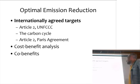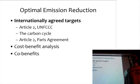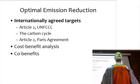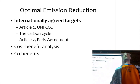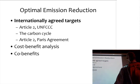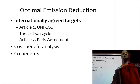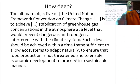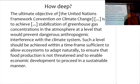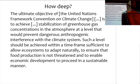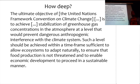Let's talk about what has been agreed internationally about what we should do about climate change. I'm going to start with Article 2 of the United Nations Framework Convention on Climate Change, agreed back in 1992. Article 2 says the ultimate objective of this convention is to achieve stabilisation of greenhouse gas concentrations in the atmosphere at a level that would prevent dangerous anthropogenic interference with the climate system — within a time frame sufficient to allow ecosystems to adapt naturally, to ensure food production is not threatened, and to enable economic development to proceed in a sustainable manner.